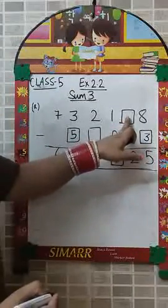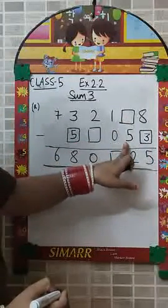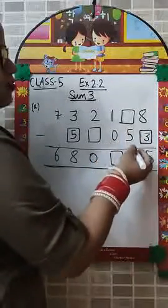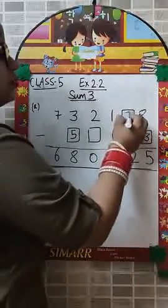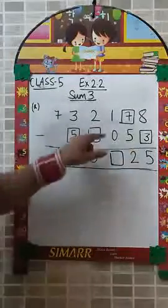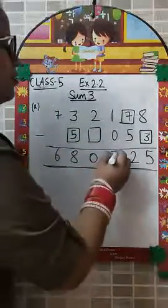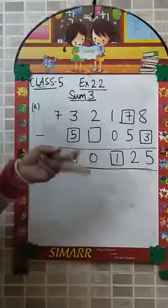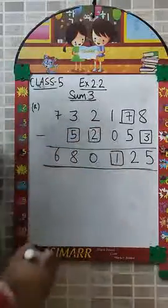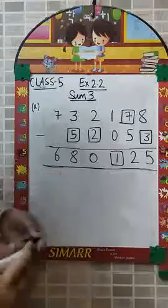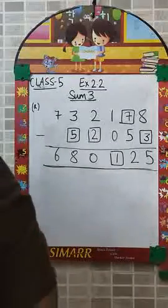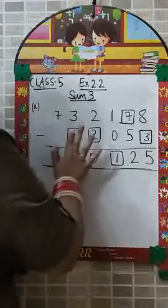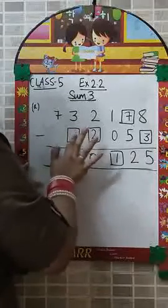From a number which we can subtract 5 such that we are getting 2. From which, that is we have to add them together. That is 5 plus 2 will be 7. From 1, we are subtracting 0. That will be 1 only. From 2, what we will subtract such that we are getting 0. The same number itself, that is 2. I will tell you.